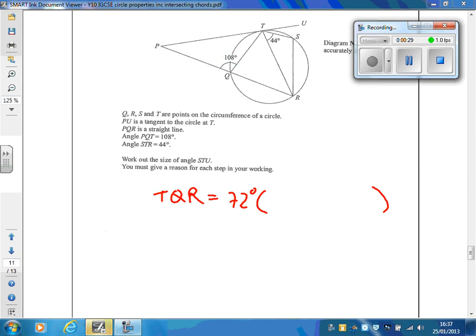So we now know that this angle here is 72 degrees. I'm now going to use the alternate segment property. Here we have a triangle and here we have a tangent, and I know because of the alternate segment property that this angle here is going to be exactly the same as this one over here.